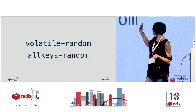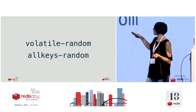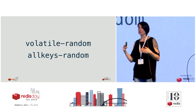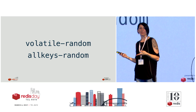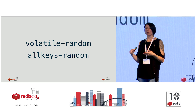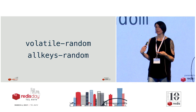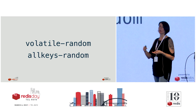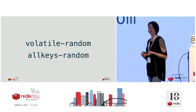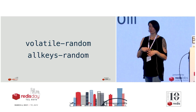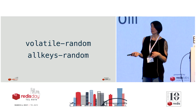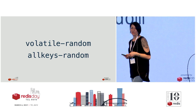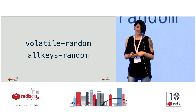So you can use the volatile-random or allkeys-random eviction policies, which were added about the same time that work on LRU had been done. With allkeys-random, you would just evict randomly any key from the full key space. With volatile-random, you would evict keys that have a TTL set.